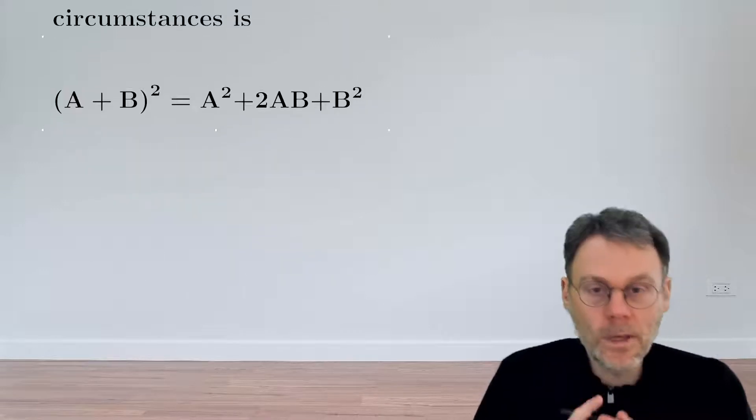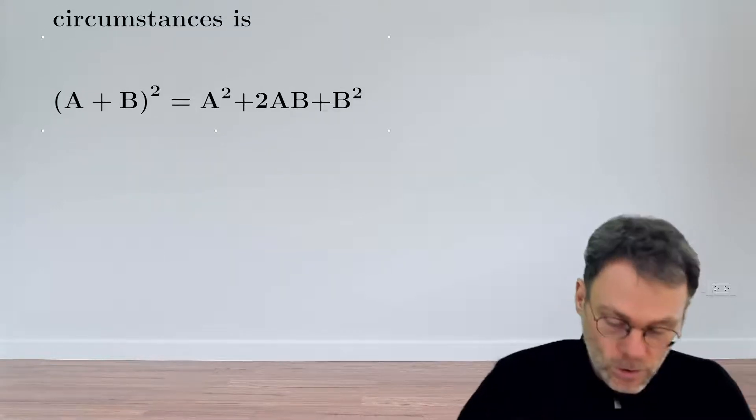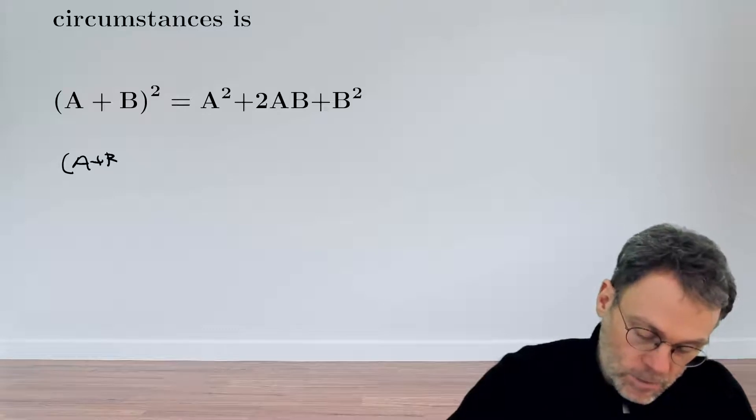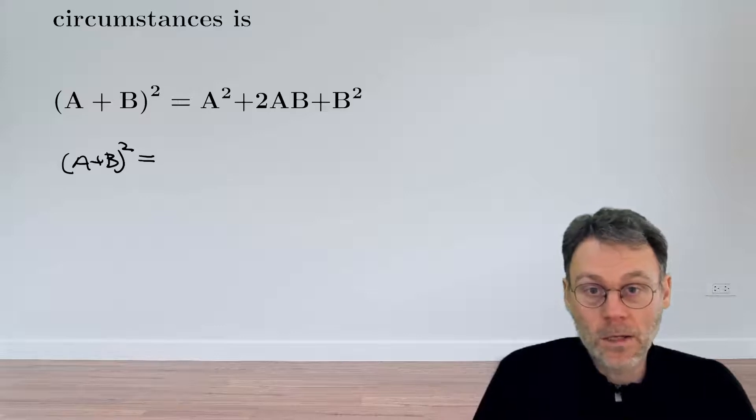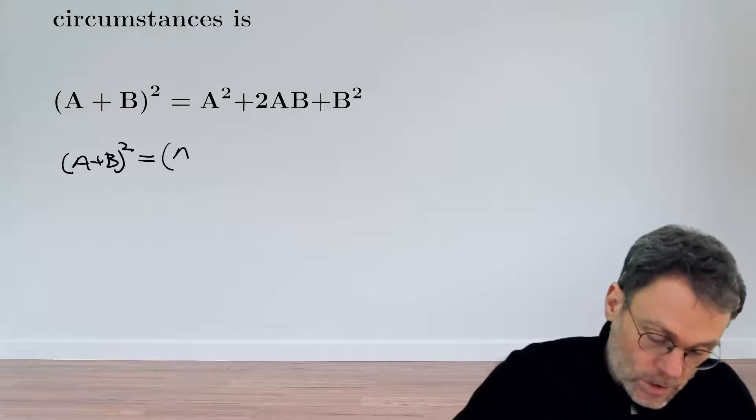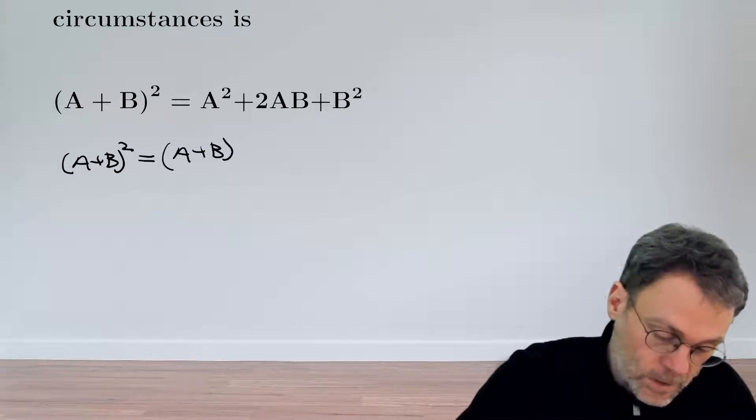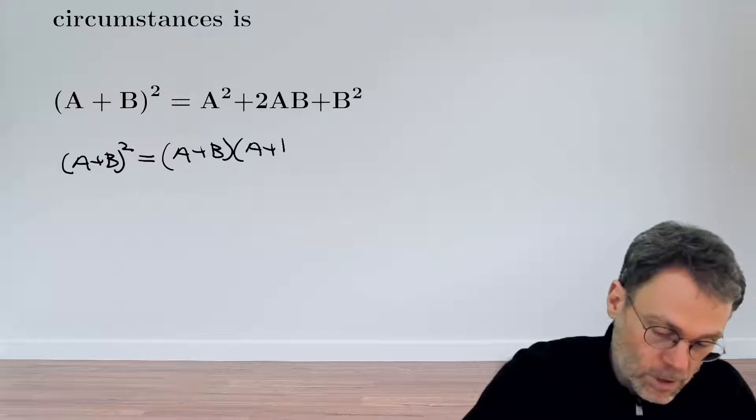Let's see what we mean by raising an operator to a certain power. If we have (A + B)², by definition that means applying the operator twice, so we can write this as (A + B) times (A + B).